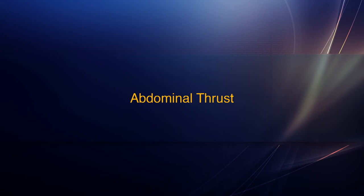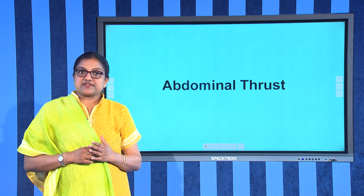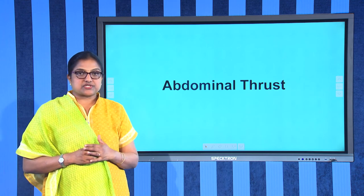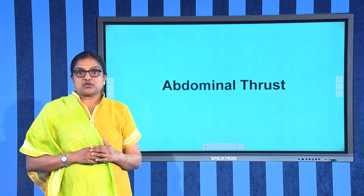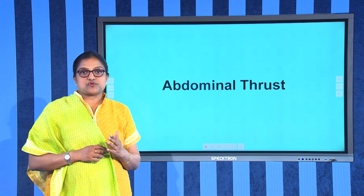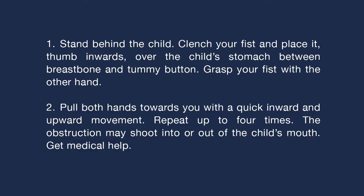Abdominal thrust: this technique can be used if back slaps have failed to dislodge an obstruction. However, it can damage internal organs, so use it only after other choking treatment has failed. Stand behind the child, clench your fist, and place it thumb-inwards over the child's stomach between the breastbone and tummy button. Grasp your fist with the other hand and pull both hands towards you with a quick inward and upward movement. Repeat up to four times.